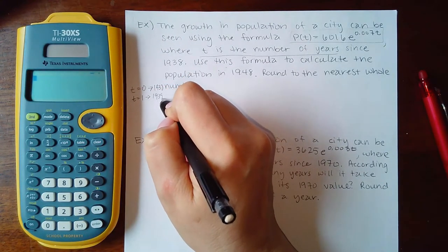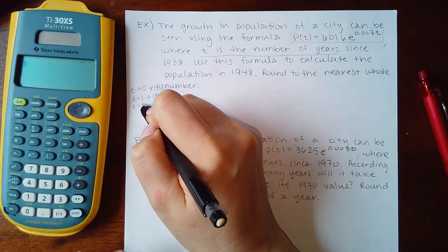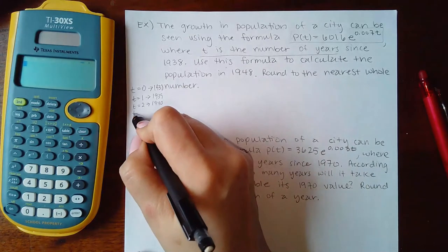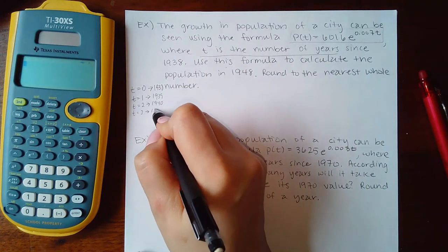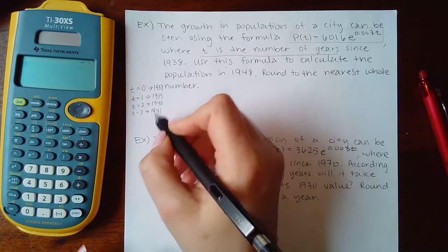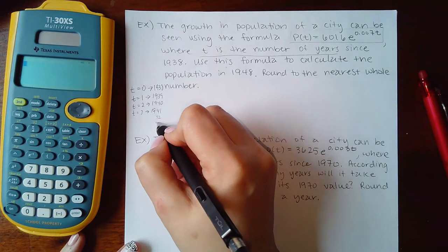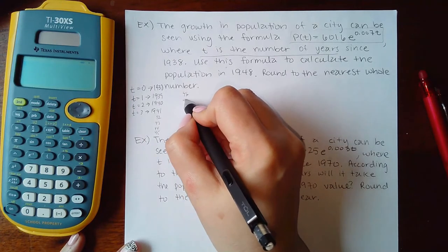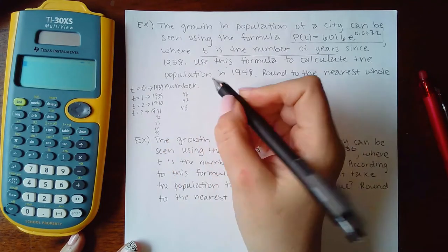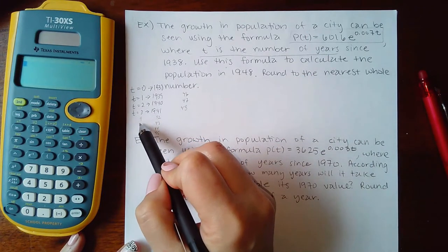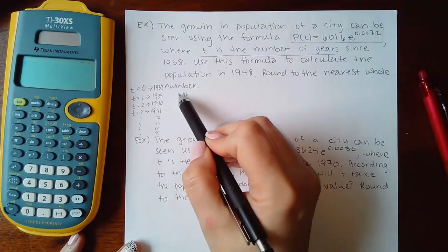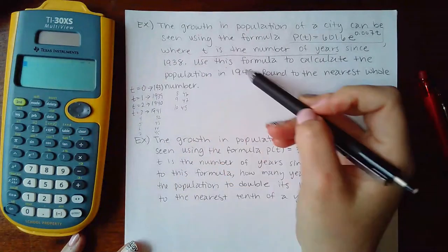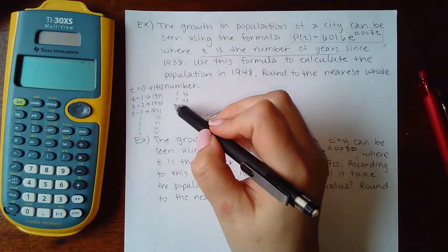And t equal to 1 is going to be 1939, t to the second would be 1940, t to the third would be 1941, and if we keep going we got 42, 43, 44, 45, 46, 47, and then finally 48. So this would be 4, 5, 6, 7, 8, 9, 10, which makes sense because 1938 to 1948 it would have been 10 years that have passed, right?